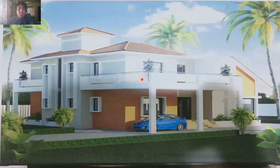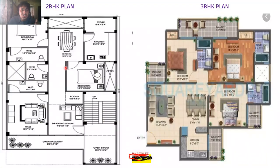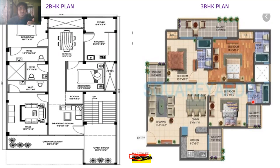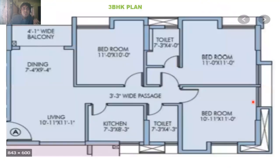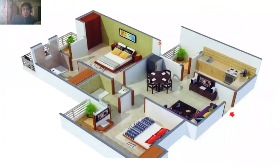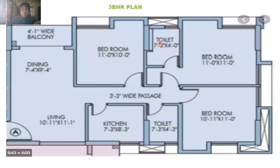We'll also look at plans for other building types. Here is a two BHK plan with an open seat-out, drawing room, puja room, bedroom, dining, store, and kitchen. Here is a three BHK plan with an entry, drawing room, dining room, kitchen, and three bedrooms with toilets attached. And here is another three BHK plan with three bedrooms, a balcony, dining, living, and toilet. All these are different plans that we give based on your requirement.